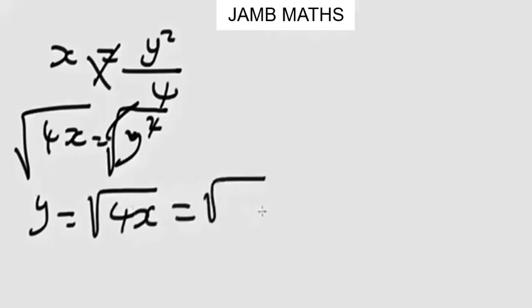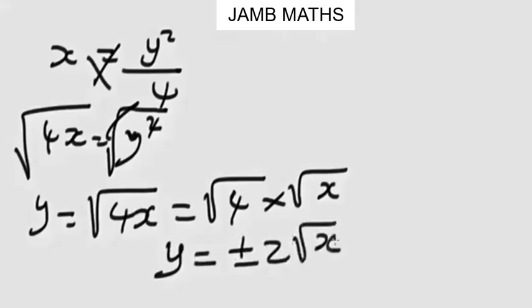Another way you can express this using the surd rule is when you separate the bracket, it's square root of 4 times square root of x. Square root of 4 is 2, so our final answer would be y equals plus or minus 2 root x.